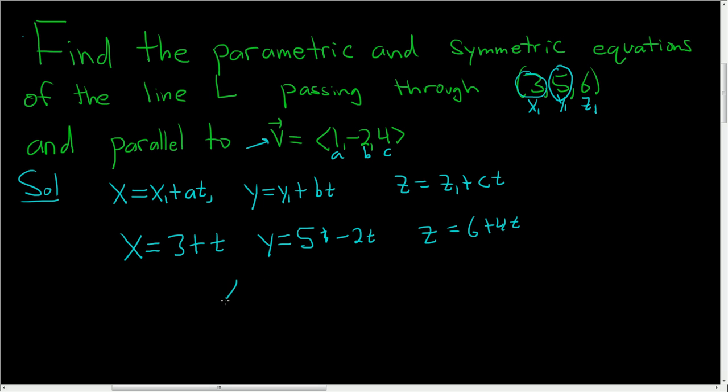So our parametric equations are x equals 3 plus t, y equals 5 minus 2t, and z equals 6 plus 4t.